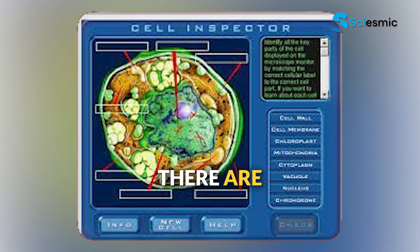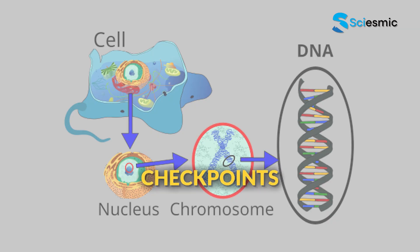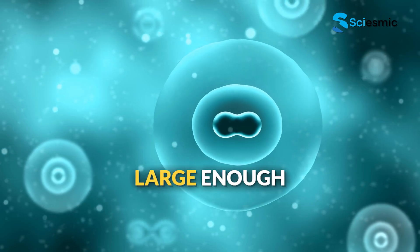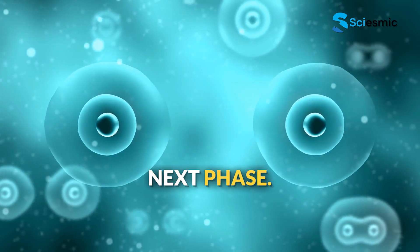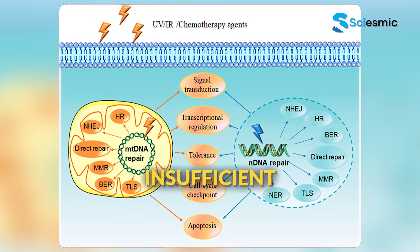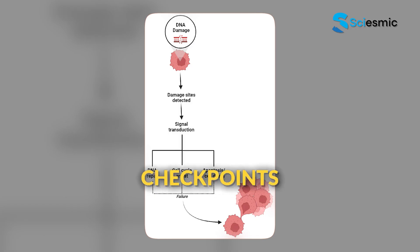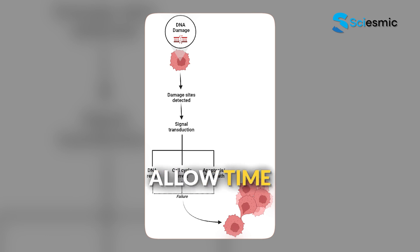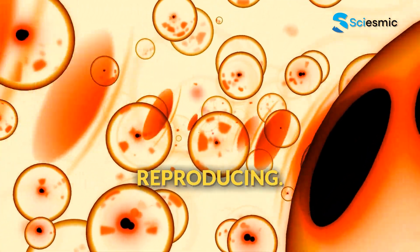Throughout the cycle there are checkpoints, like quality control inspectors in a factory. These checkpoints ensure DNA has been copied correctly, the cell is large enough to divide, and everything is ready for the next phase. If something's wrong — damaged DNA, insufficient resources, or incorrect chromosome numbers — the checkpoints can stop the cycle and either allow time for repair or trigger cell death. This prevents problematic cells from reproducing.